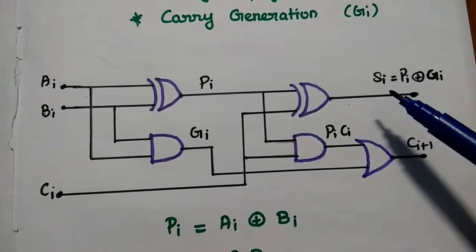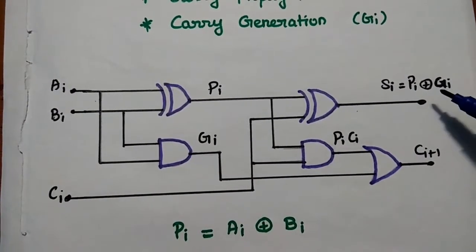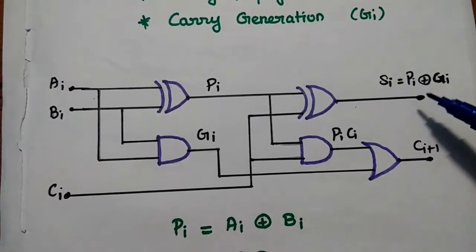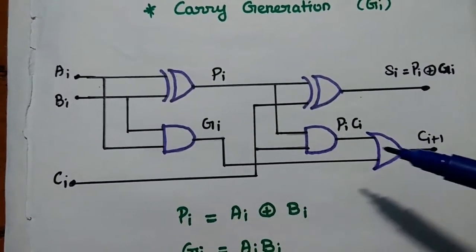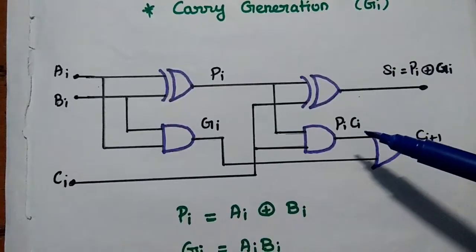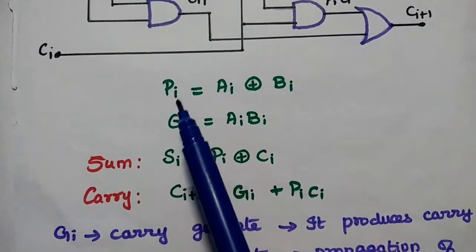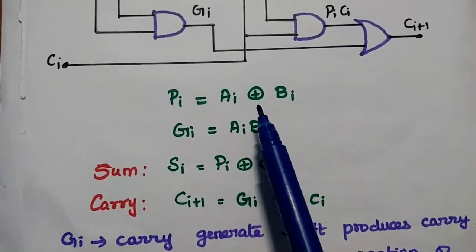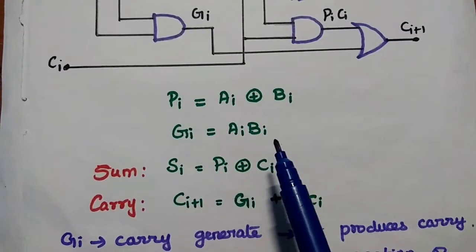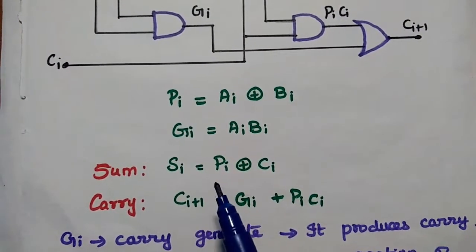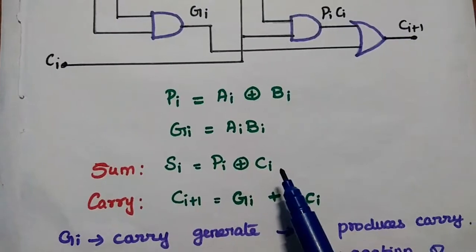Carry generation is obtained as the AND operation between Ai and Bi. The sum can be obtained as Pi XOR Gi, where G represents carry generation and P represents carry propagation. The carry output of this full adder is C(i+1), which is equal to the product of carry propagation and the input carry. So carry propagation Pi equals Ai XOR Bi, and carry generation Gi equals Ai multiplied with Bi. The sum is obtained by the XOR operation between carry propagation and the input carry.